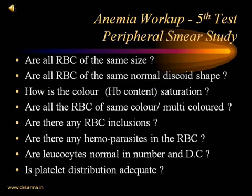So in the workup, we have: first test — hemoglobin, RBC count, and hematocrit; second — reticulocyte count and deriving the RPI; third — MCV to classify microcytic, normocytic, or macrocytic; fourth — RDW to assess whether it is less than 12, 12–14, or more than 14, and whether there is a shift; and fifth — the study of the peripheral smear. The peripheral smear is highly important because it gives a lot of information about the RBCs by physically looking at them.